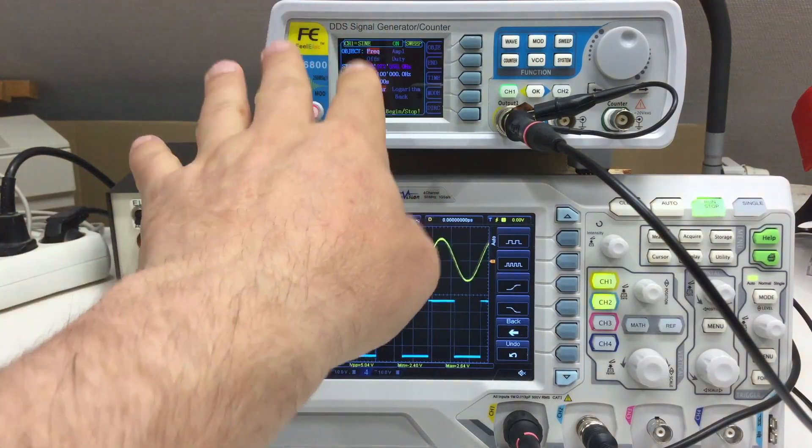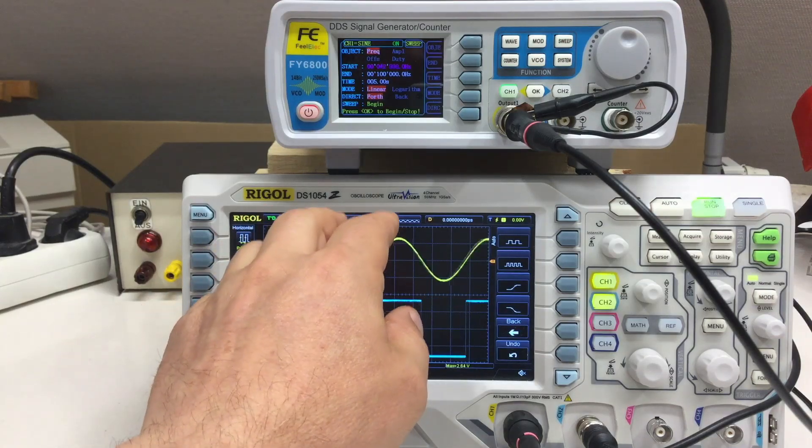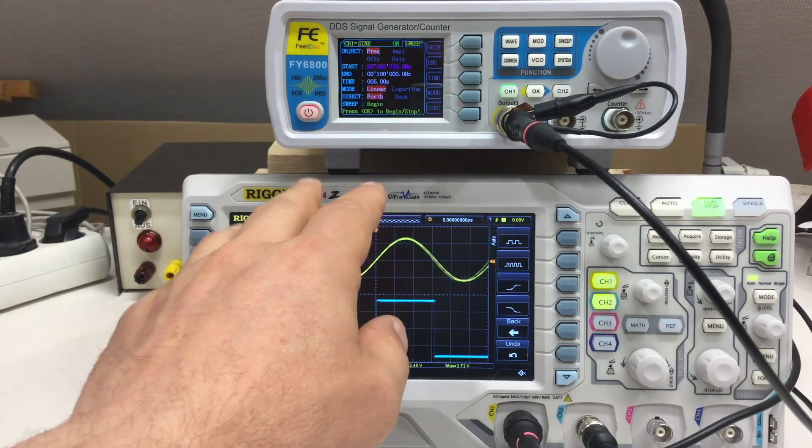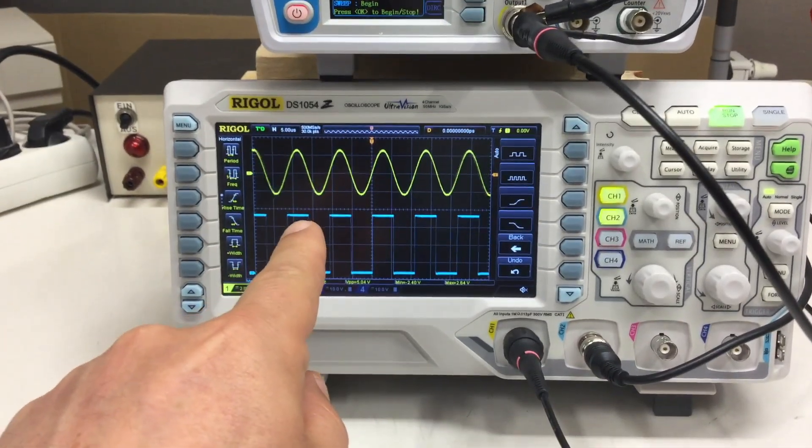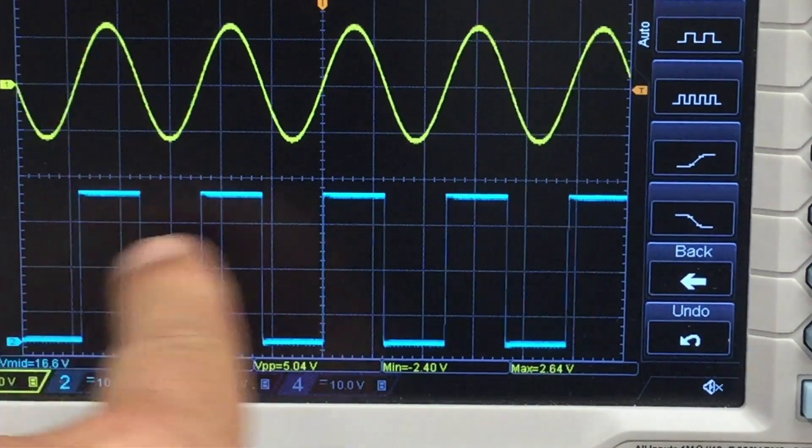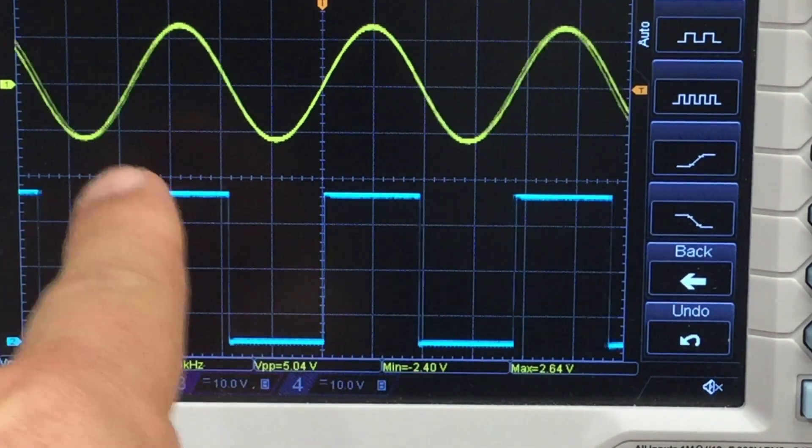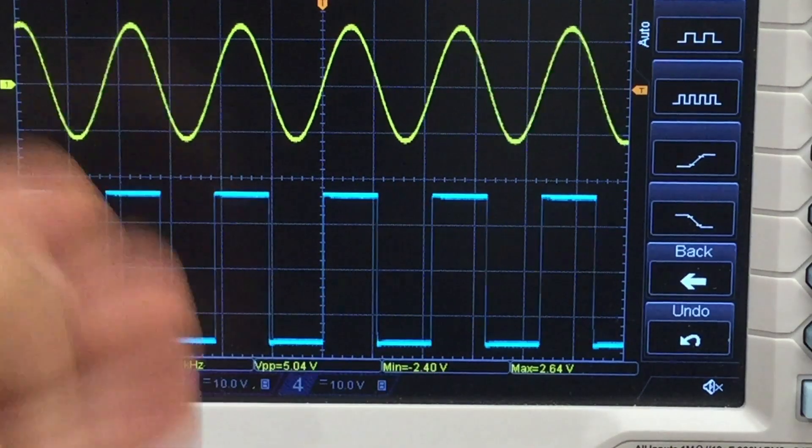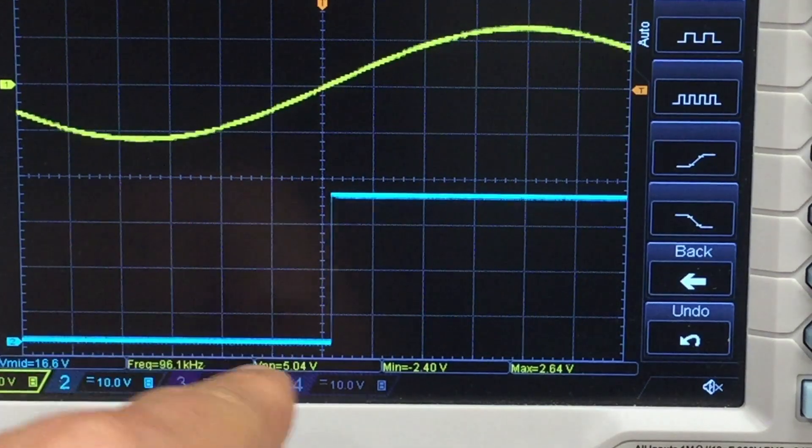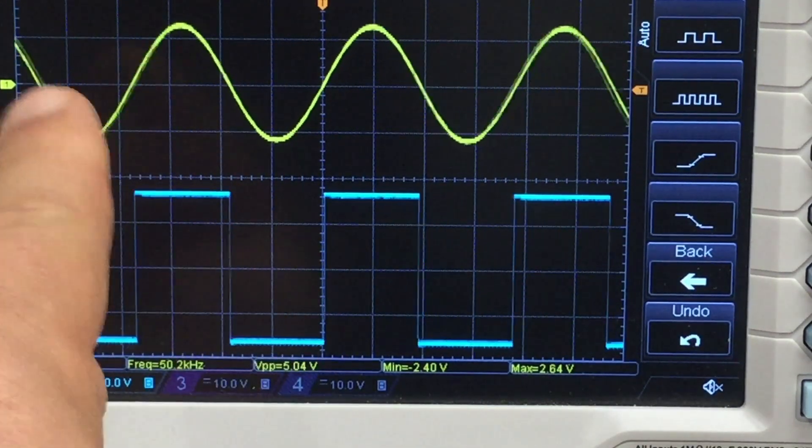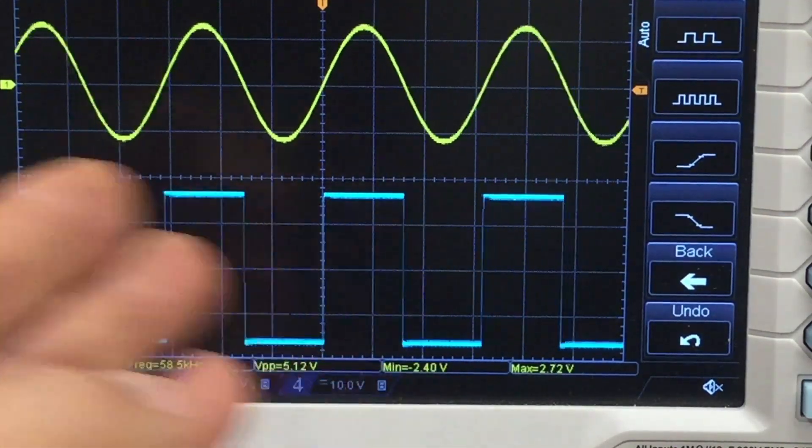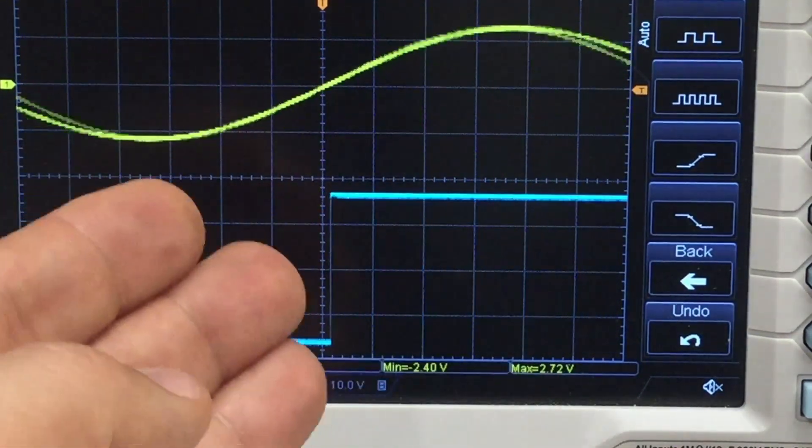I have set it up to sweep here from 10 kilohertz to 100 kilohertz. If we look at the screen of the oscilloscope, you see the sync output at the back is just a Schmidt triggered form of the waveform output of the generator. So yeah, nothing to see here.